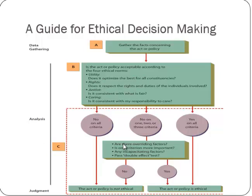Ethical decision-making has many steps. If there's a question about whether something is ethical, you have to ask: is it the best for all people involved? Does it respect the rights and responsibilities of others? Is it fair? Is it consistent with your responsibility to care about other people? Even if something is not 100% fair or doesn't fully care about others, it can still be outweighed by its good — for example, paying lower wages may be acceptable if necessary to produce something that's better for the world, or borrowing materials may be justified if it's going to save lives.